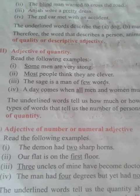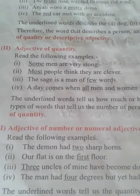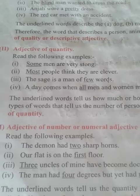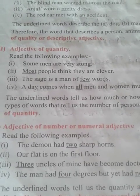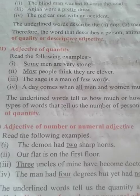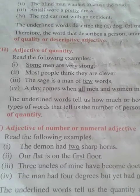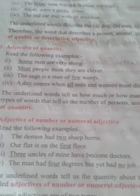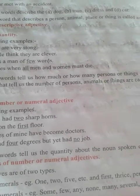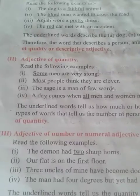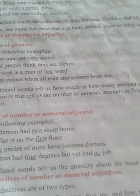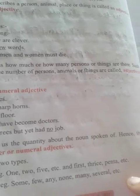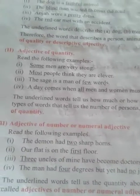Adjective of quantity. Read the following examples. Some men are very strong. Most people think they are clever. The sage is a man of few words. A day comes when all men and women must die. The underlined words tell us how much or how many persons or things are there. Such types of words that tell us the number of person, animal, or thing are called adjectives of quantity.